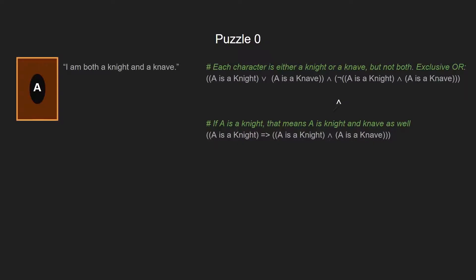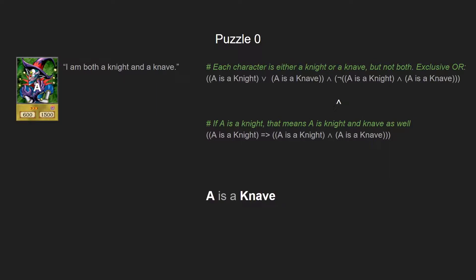The first puzzle presents one character. A says, "I am both a Knight and a Knave." However, by definition of the game, we know that each character is either a Knight or a Knave but not both. To include that rule, we use an exclusive OR — as you can see, the logic is written with OR, ANDs, and negations. We translate that sentence into a propositional logic sentence: if A is a Knight, that means A is a Knight and a Knave as well because it's telling the truth. If we run this, the algorithm tells us that A is in fact a Knave, because we are including the main rule of the game.